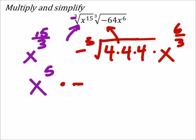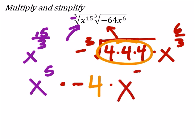So, the cube root of 4 times 4 times 4. Again, we're looking for groups of 3 in this case. So, that'd be a negative 4 times x to the power of 6 divided by 3 is 2.